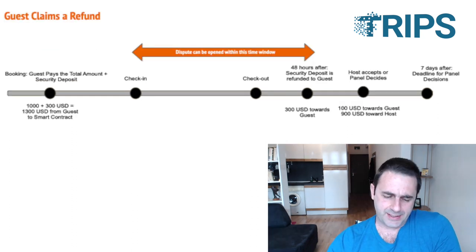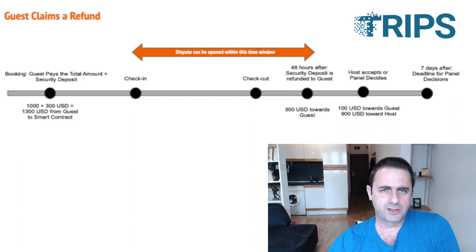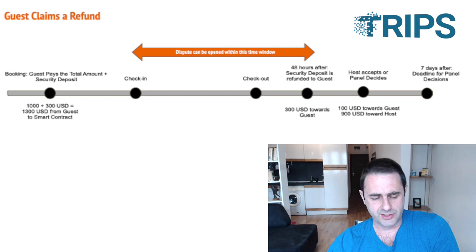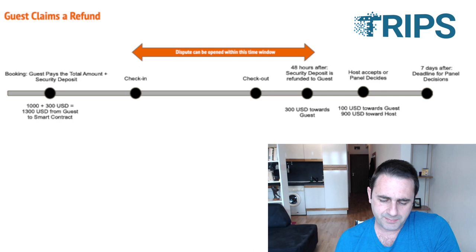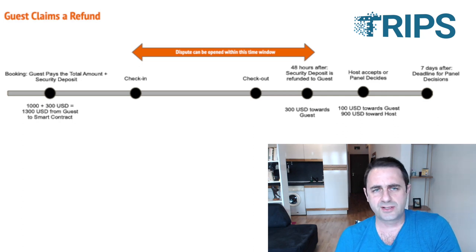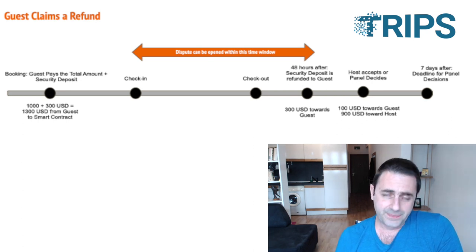Now let's see what happens when the guest claims a refund. Something went wrong and the guest wants some money back. The guest paid a thousand dollars plus three hundred dollars security deposit, checked in, checked out, and says: I want to be paid a hundred dollars because the internet didn't work and I lost business.